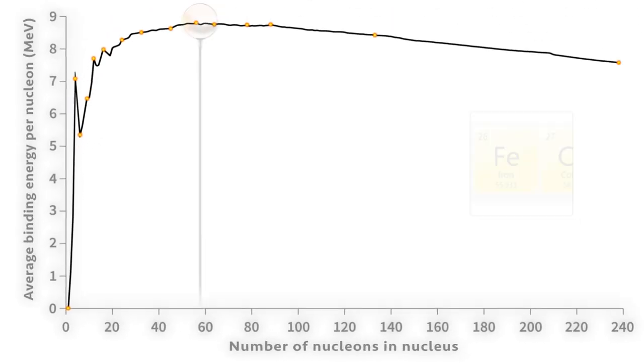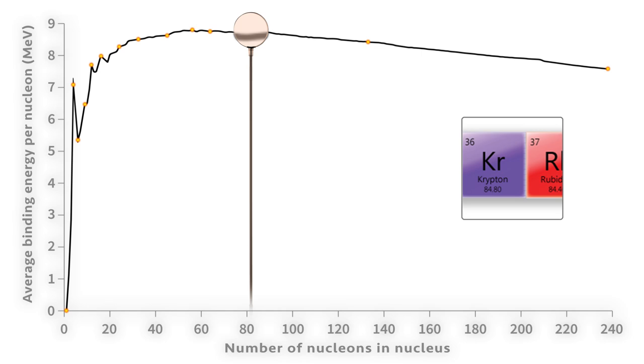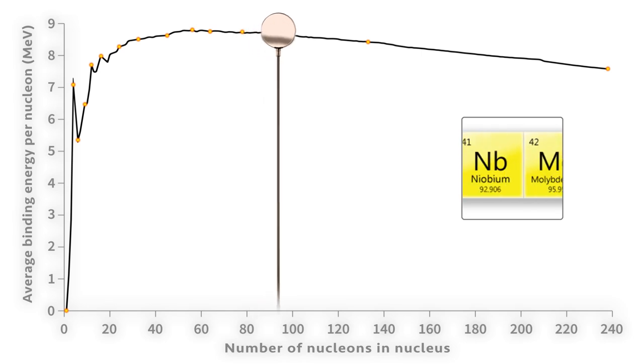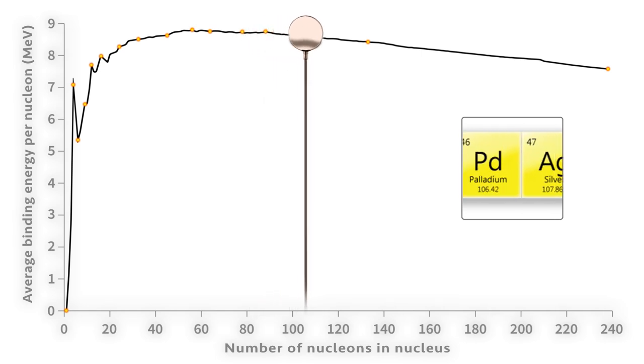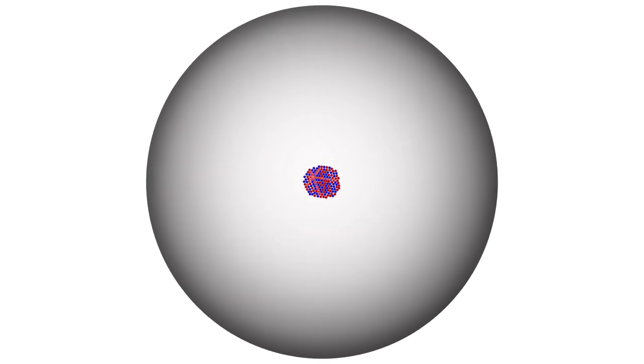Now, look at the right side of the curve of nuclear binding energy. Once we get beyond iron, the stability of the nuclei begins to decline again. Why? As the nuclei become bigger and bigger, the nucleons become further apart from each other.